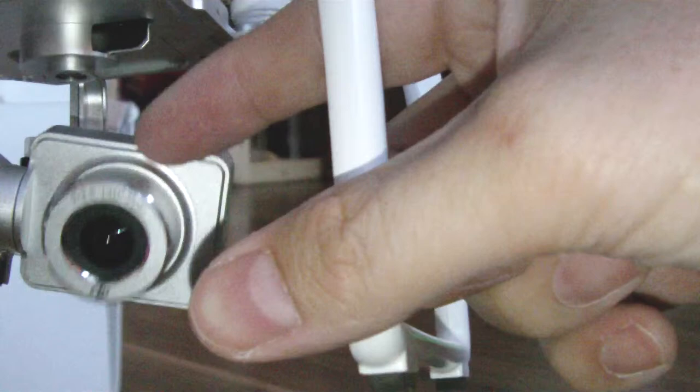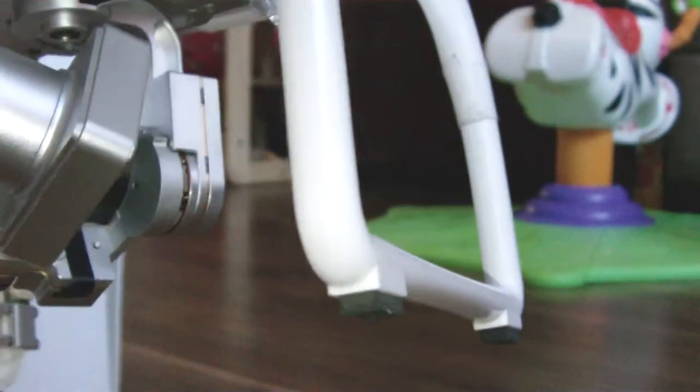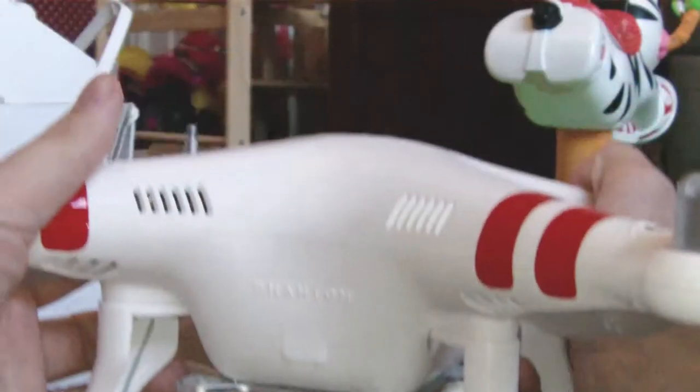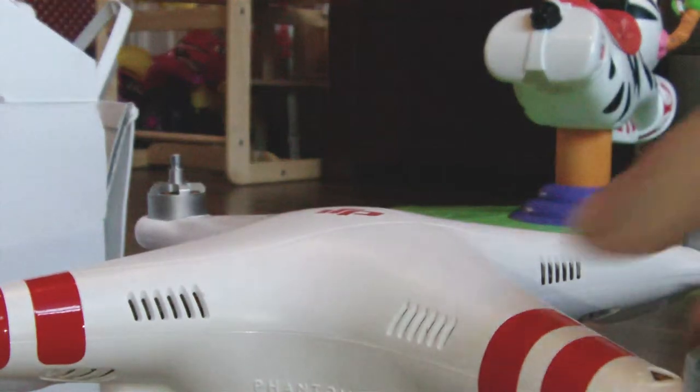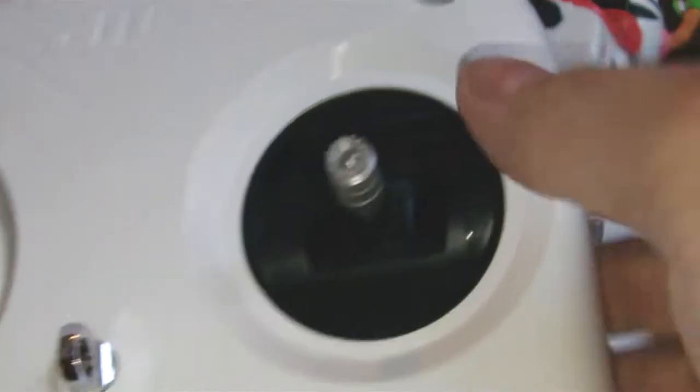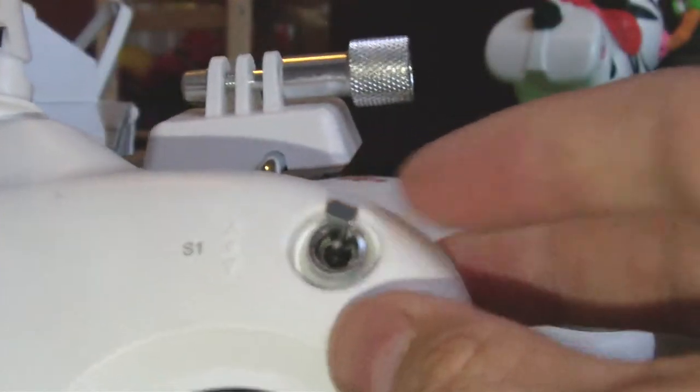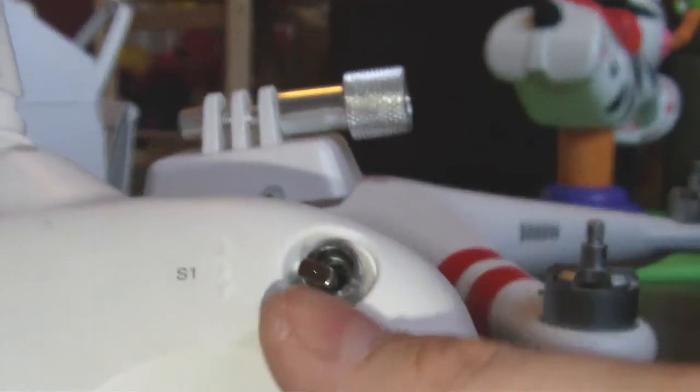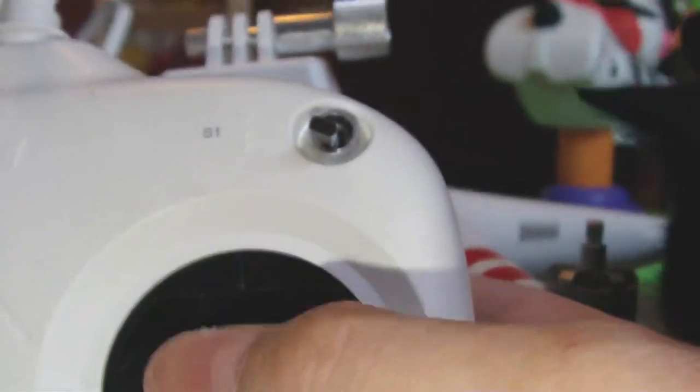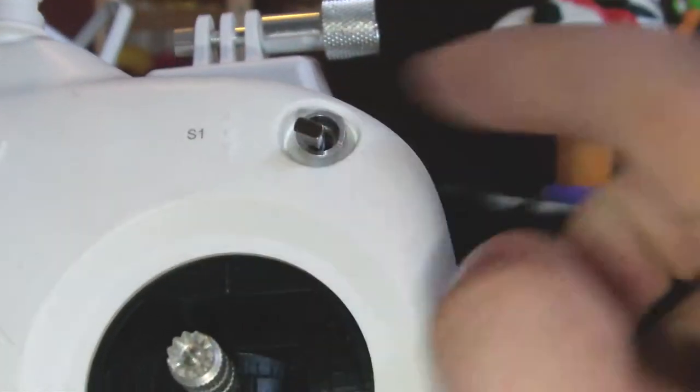Before I power it on, I'm just going to look at the controller. The controller, as well, I notice that these switches up at the top, they're not exactly lined up. They're not going exactly up and down. You can see by the little pointer there.